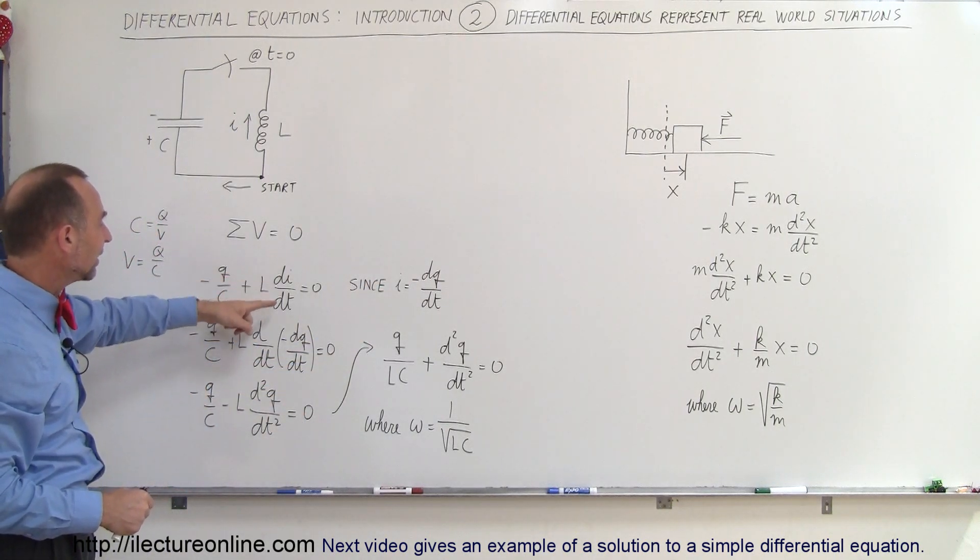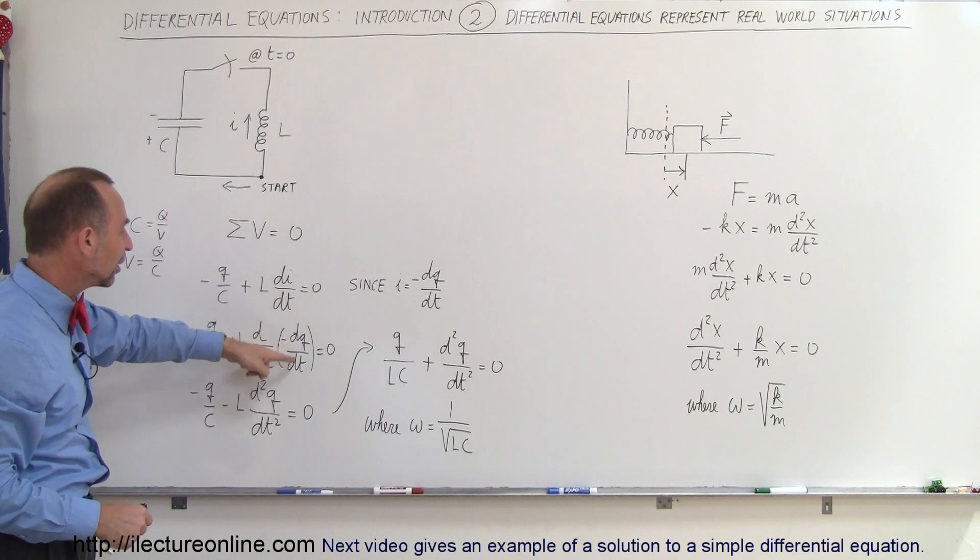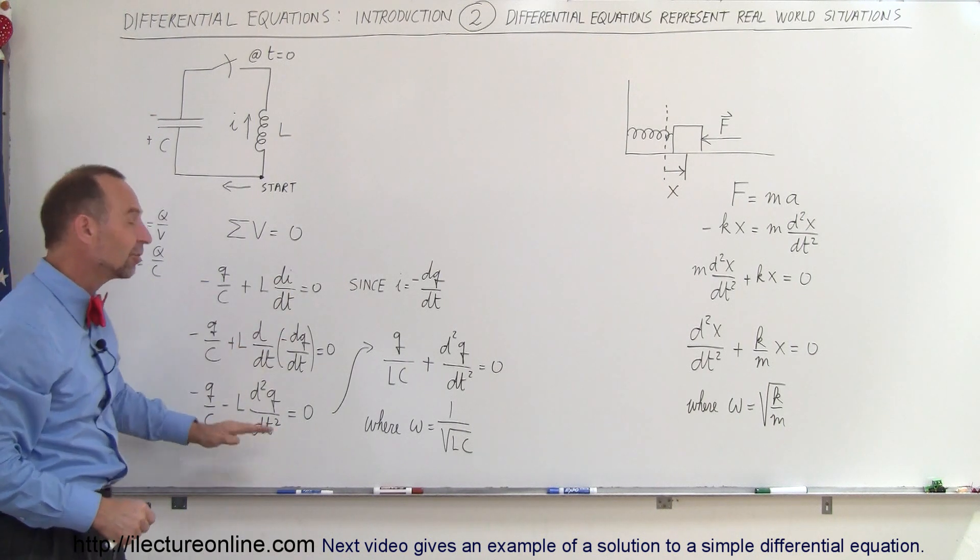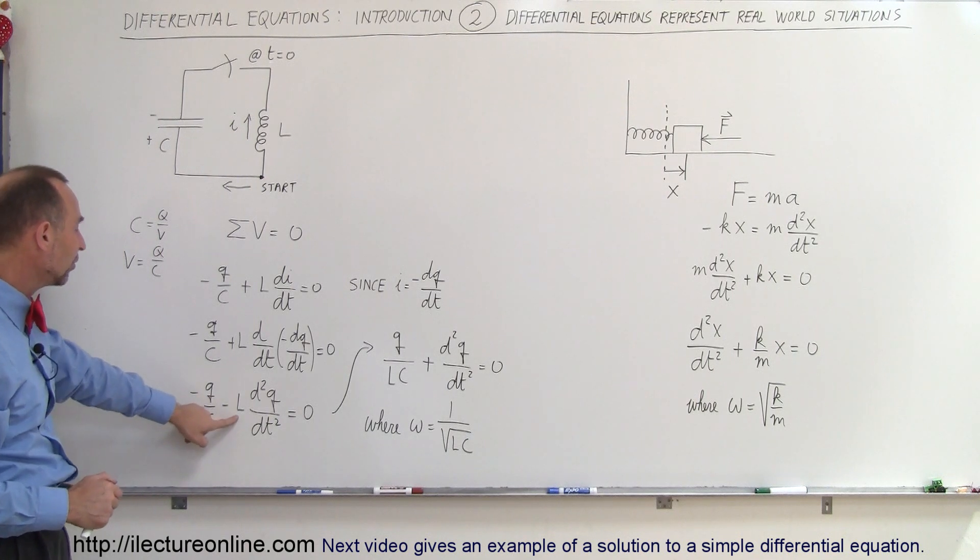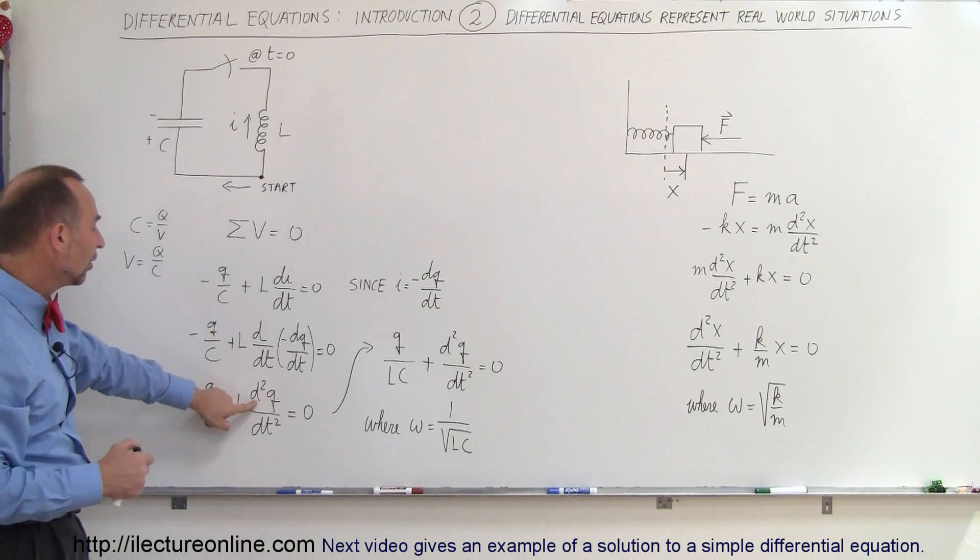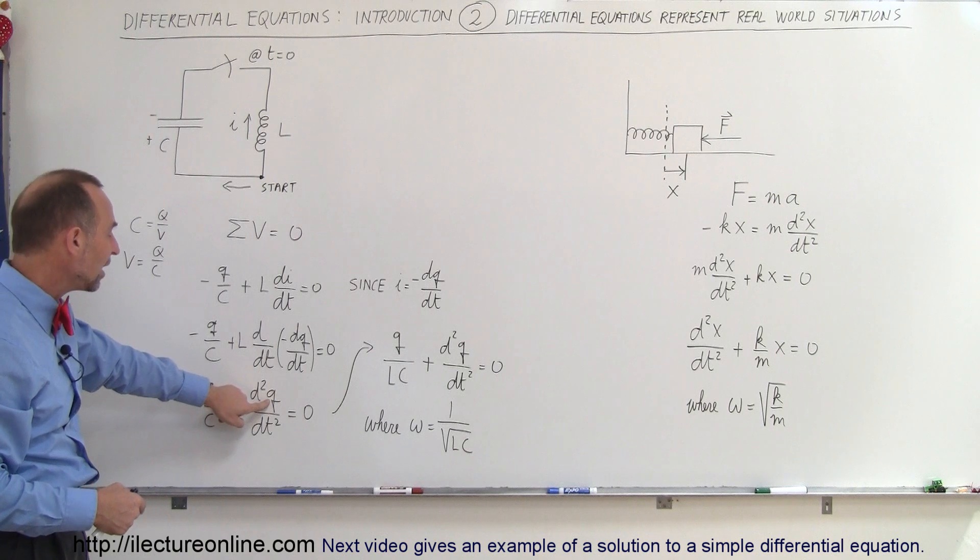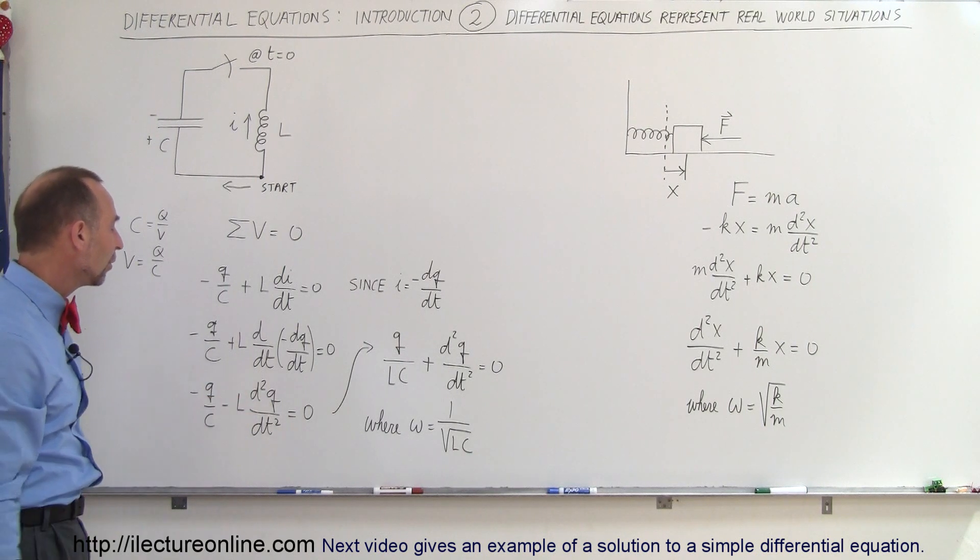If we replace the DI, if we replace I by minus DQ/DT, then this now becomes a second order differential equation. We have minus Q over C equals the inductance, times the rate of, the second derivative of the change of the charge with respect to time.